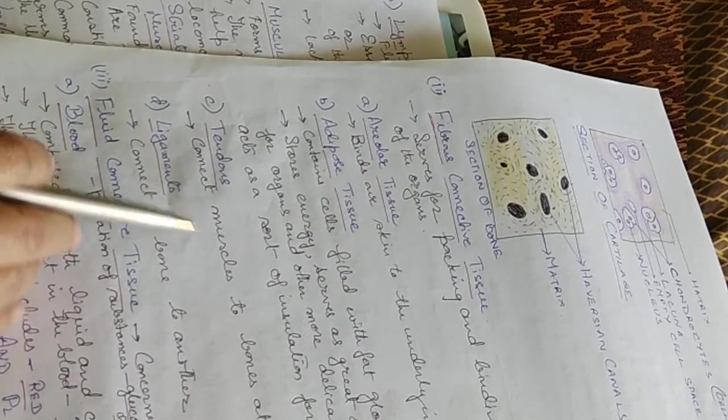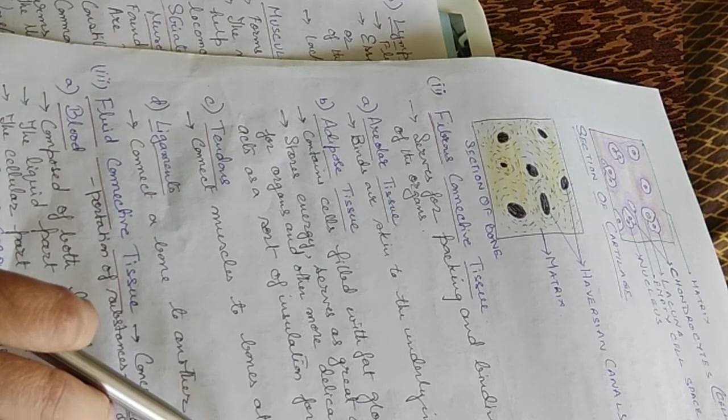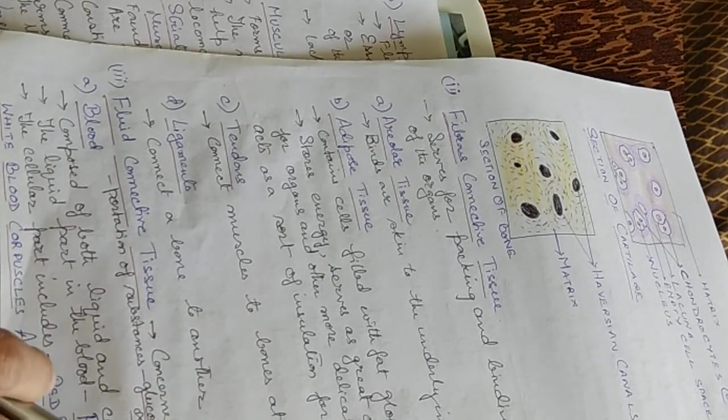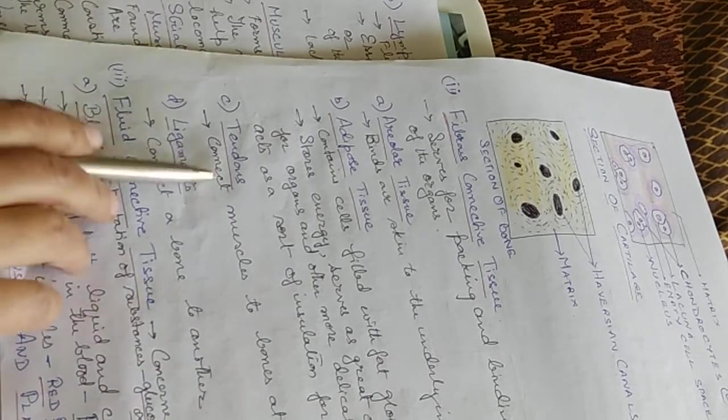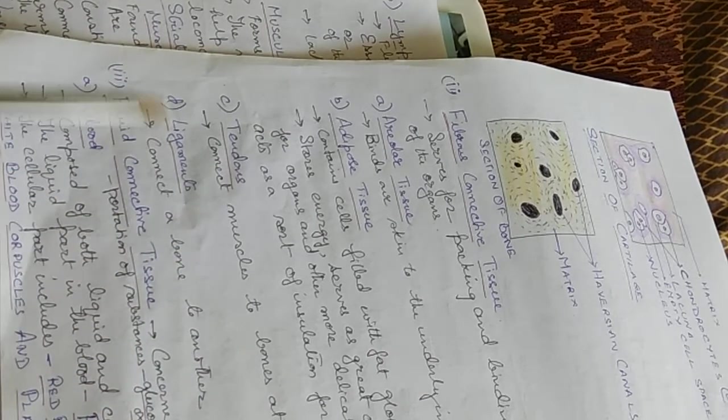Tendons connect muscles to bones at the joints. Ligaments connect a bone to another bone at the joints. Tendon is muscle to bone and ligament is bone to bone.